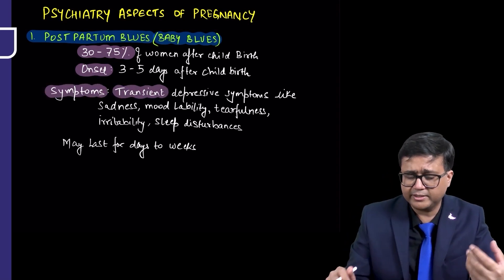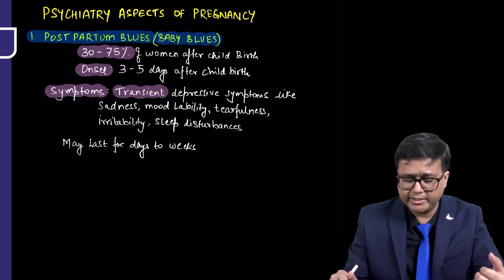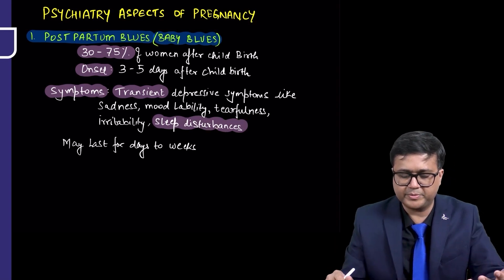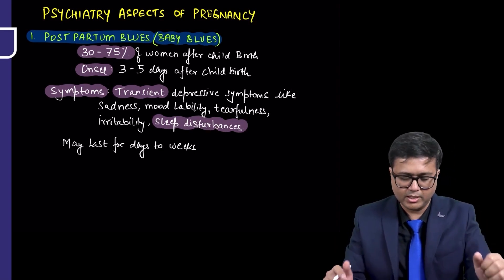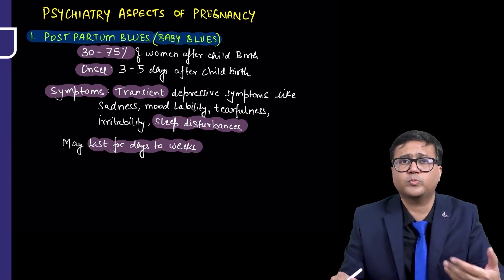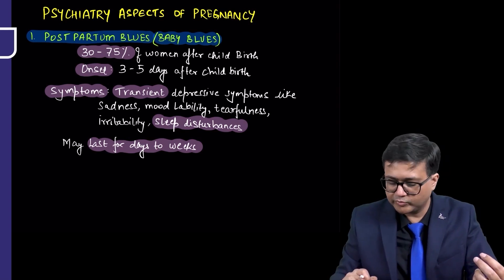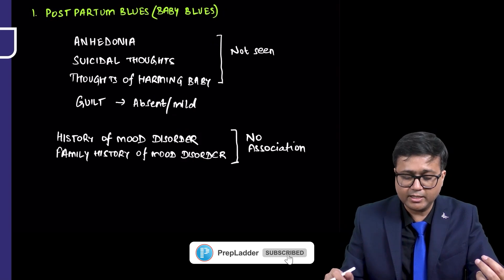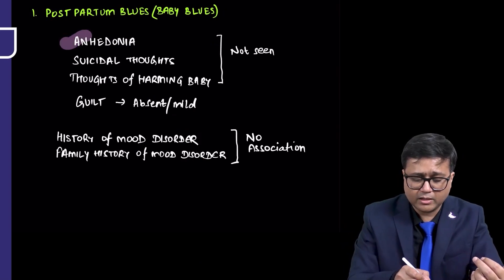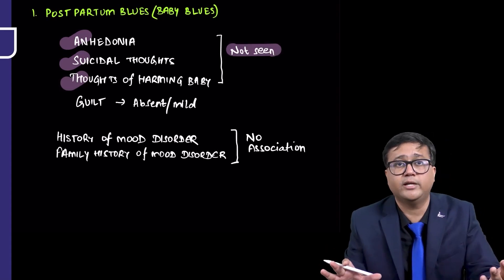Symptoms generally are there transient mood symptoms, depressive symptoms like sadness, mood lability, tearfulness may be there, irritability may be there, sleep disturbances may be there. These are transient symptoms, temporary symptoms. They may last for few days to weeks and subsequently they will resolve spontaneously. It is common, 30 to 75 percent of women may experience such changes. Symptoms, more severe symptoms like anhedonia, suicidal thoughts, thoughts of harming the baby, are generally not seen in postpartum blues.